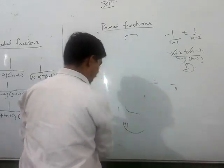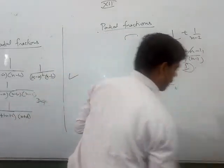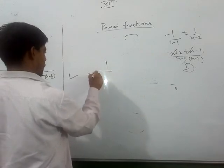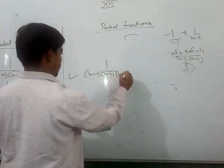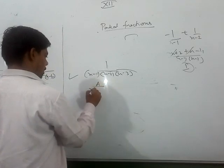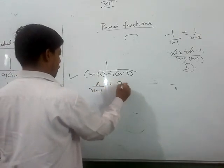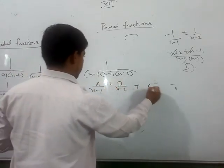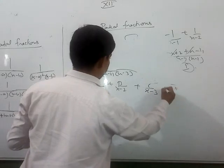Suppose there are three: 1 upon (x-1)(x-2)(x-3). So you have A upon x-1, B upon x-2, C upon x-3, and so on for linear factors.